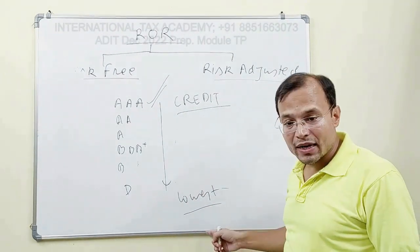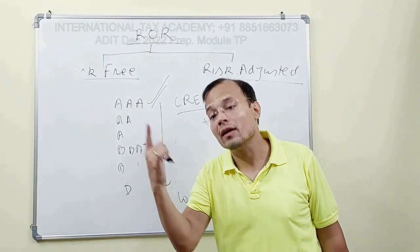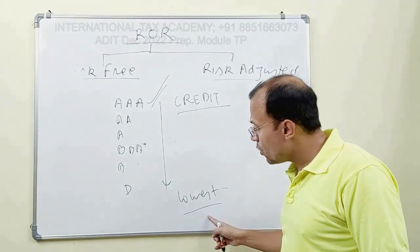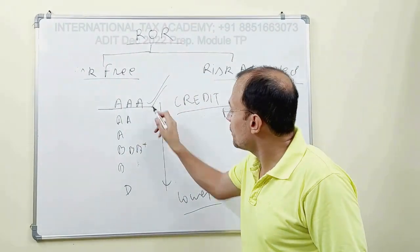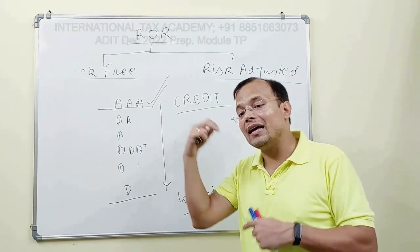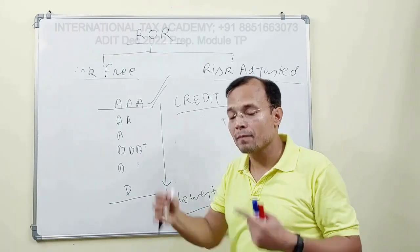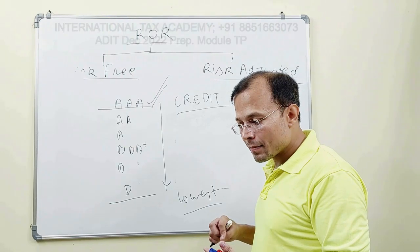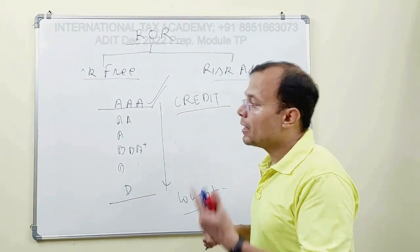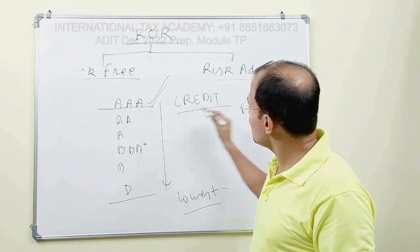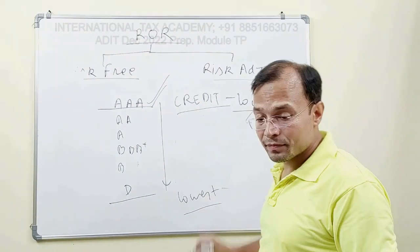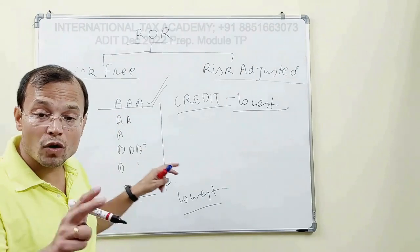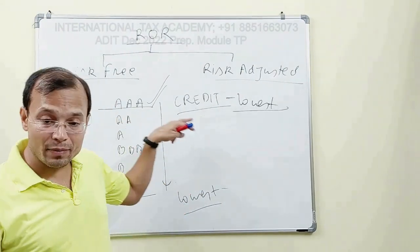The highest credit rating corresponds to the lowest rate of return, and the lowest credit rating corresponds to the highest rate of return. Triple-A rated entities carry the minimum risk of default, so they offer the lowest rate of return. D-rated entities like Sri Lanka would have to offer a very high rate of return to attract investors because the risk of default is the highest.